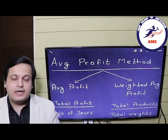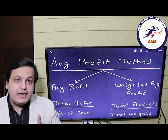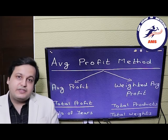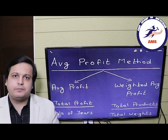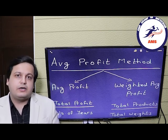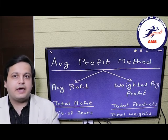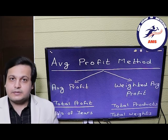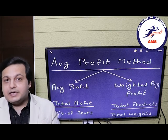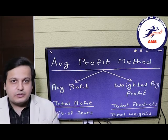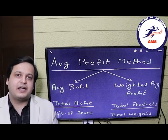Firstly, what is goodwill? Goodwill can be termed as the monetary value of the brand name of a business. For example, let's take Nike. The shoes which they manufacture will cost only around 2000 rupees. But whenever you go to the showrooms and buy, it will cost you around 5000 or 6000 rupees, and yet you don't mind paying that extra money. So why do you pay that extra money? It's because of the brand name or the goodwill of that company.